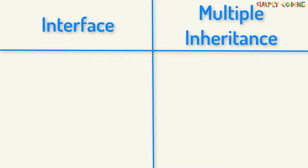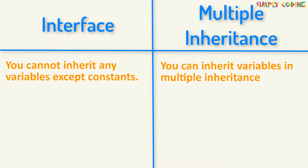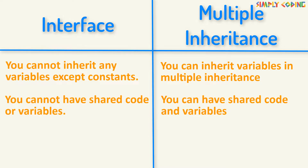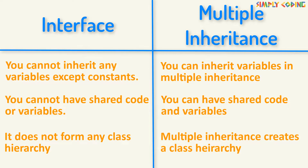So what is the difference between interface and multiple inheritance? It might sound as though through interfaces you can achieve multiple inheritance, but that is not entirely true. In interfaces, you cannot inherit any variables except constants, while in multiple inheritance you can inherit variables. You cannot have shared code or variables in an interface, but in multiple inheritance you can. An interface does not form part of the class hierarchy, as unrelated classes can implement the same interface. Multiple inheritance, however, creates a class hierarchy.